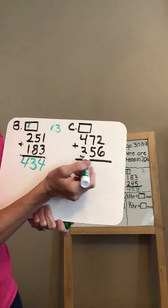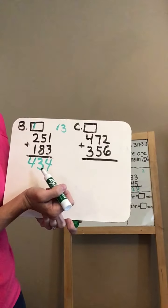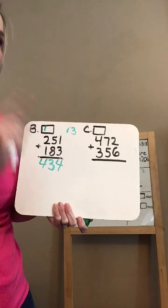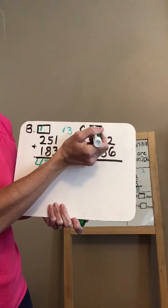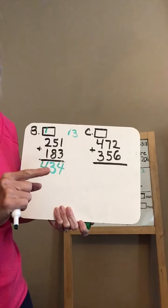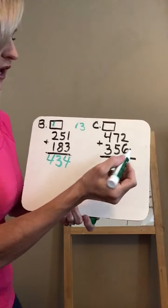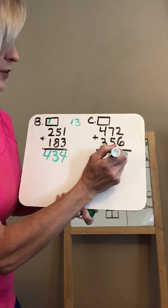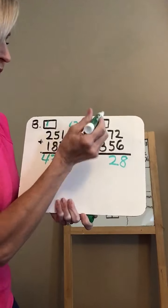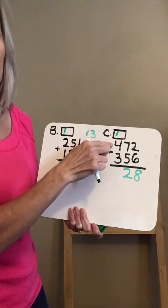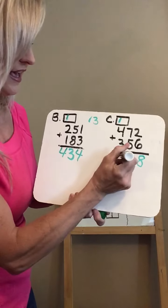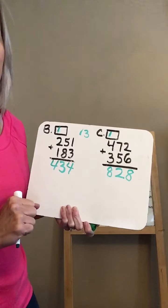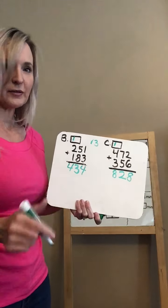Now I want you to write the third problem on your whiteboard: 472 plus 356. Line up your places and pause the video to work it on your own. Remember which place you're starting with and make sure you carry to the hundreds column. Let's check it: 2 plus 6 equals 8; 7 plus 5 equals 12 — write the 2, carry the 1; 1 plus 4 is 5, and 5 plus 3 is 8. So 472 plus 356 equals 828.